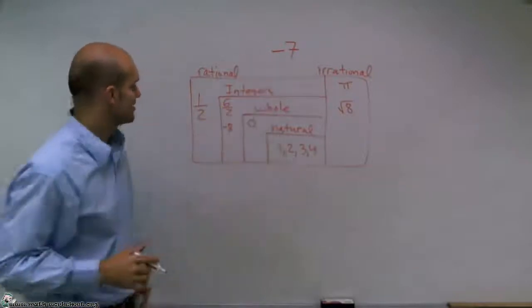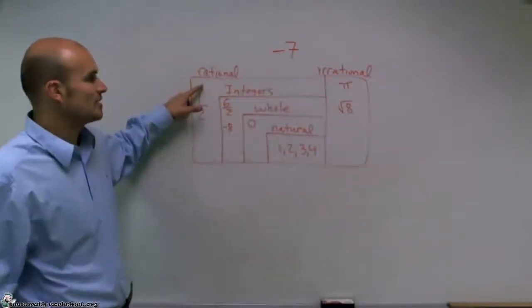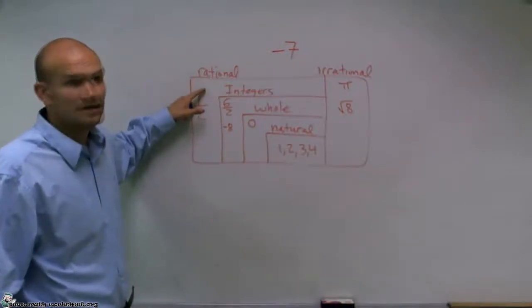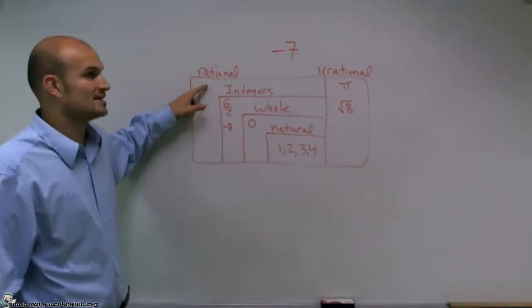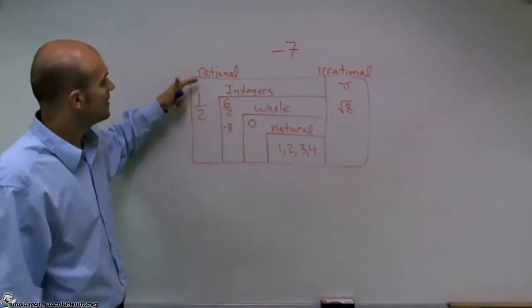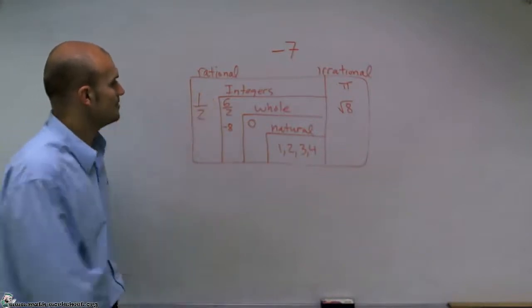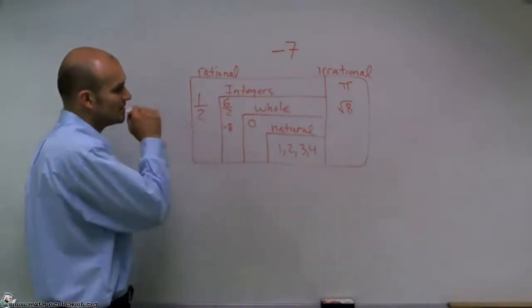So when I look at negative 7, I say, all right, is negative 7 on the rational side? It's definitely a rational number. I can rewrite negative 7 as a fraction. I can rewrite it as negative 14 divided by 2. I can rewrite it as negative 7 over 1. Then I look at it, it's definitely an integer, because I can rewrite it as a negative number.